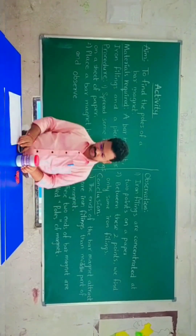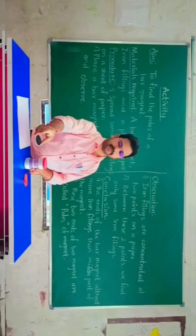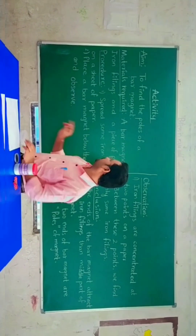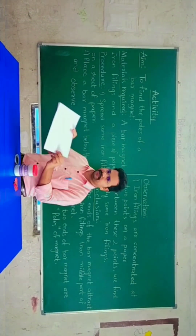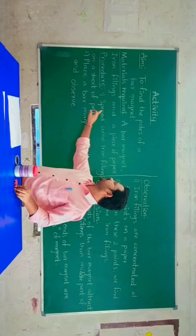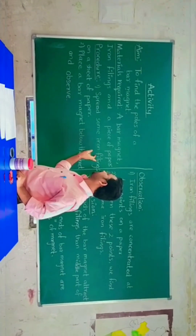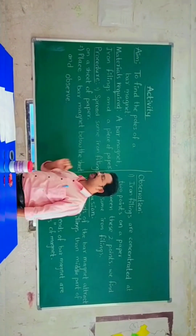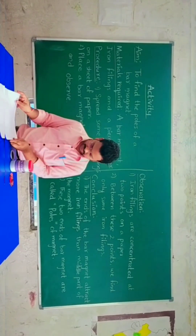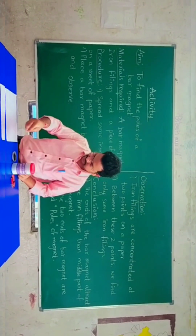Iron filings — you can see them in this box. And a piece of paper. The procedure for this activity is: spread some iron filings on a sheet of paper. I have taken a sheet of paper, and now I am going to spread some iron filings on it.